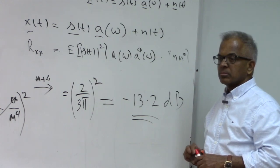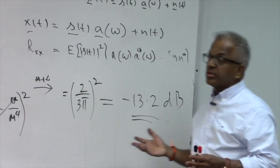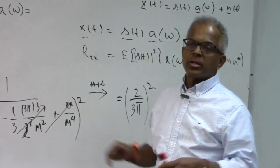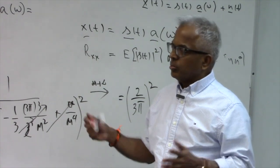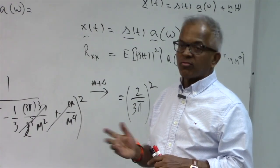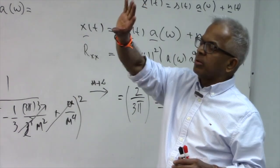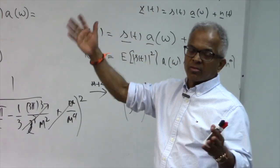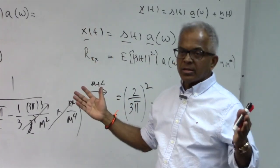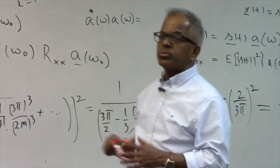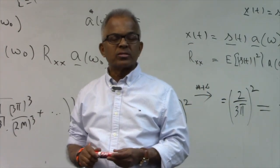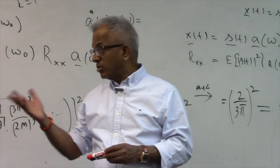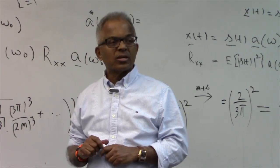To reduce the side lobe below −13.2 dB, you must bring in additional weights — this becomes window design. With any other weights (Chebyshev, Taylor, etc.), the main beam width will increase but you can achieve better side lobe suppression. We will take a different direction in the next class.